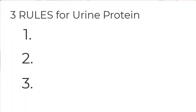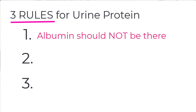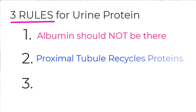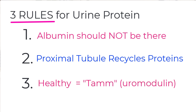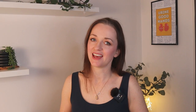So those are the three rules. Number one: albumin should remain in the blood — if the glomerulus is healthy, albumin should not be in the urine. Number two: the proximal tubule recycles small physiological proteins which pass into the filtrate, and we shouldn't see these in our urine. Number three: the healthy protein found in the urine is Tamm-Horsfall protein, also known as Uromodulin.